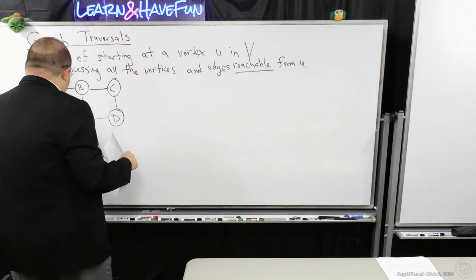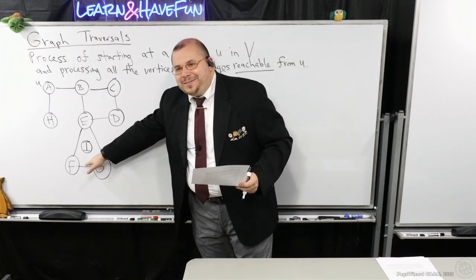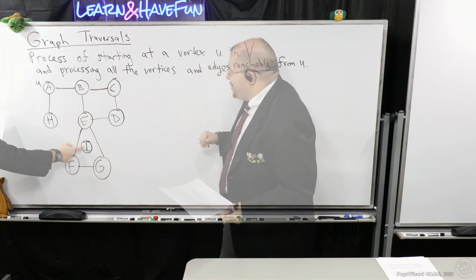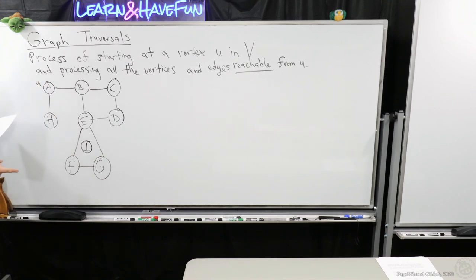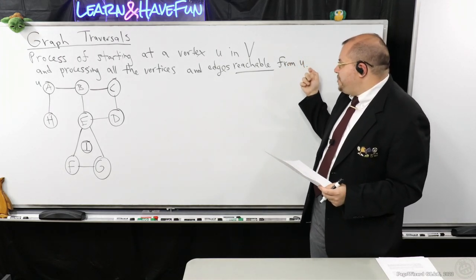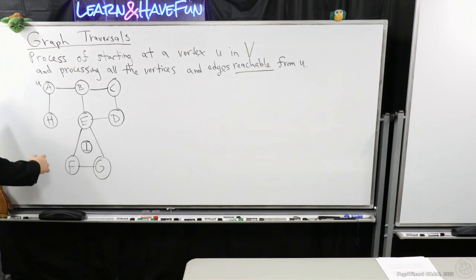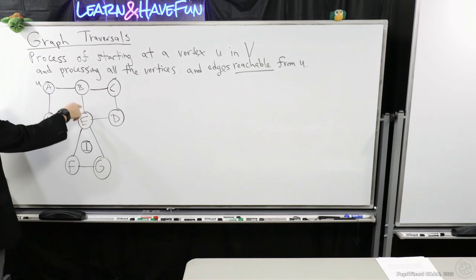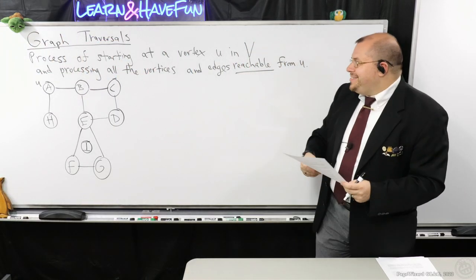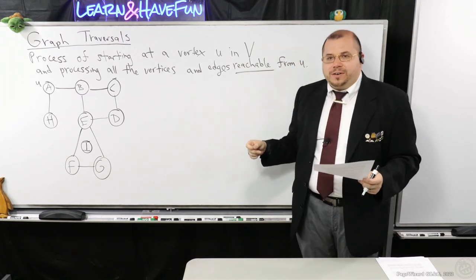Now suppose I introduce to you another vertex I. Vertex I is isolated — it doesn't have any incident edges, so there's no path from I to any of the other vertices. That implies you can't reach it from U, because there is no path from A to I. So we would say all of these edges forming this connected component, with the exception of I, because I is not reachable from A — that's what I mean by reachable.